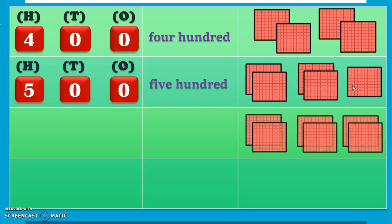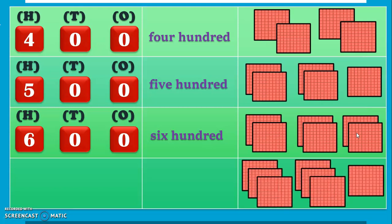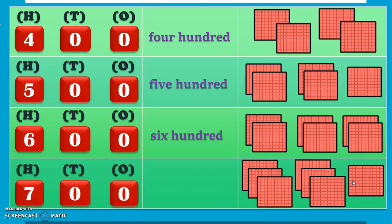The next number: 6 blocks of 100s — 1, 2, 3, 4, 5, and 6 — makes the number 600. The number name for the same will be Six Hundred. The next number in the series: 7 blocks of 100s — 1, 2, 3, 4, 5, 6, and 7 — we have 7 blocks of 100, which makes the number 700. The number name for 700 is SEVEN HUNDRED.